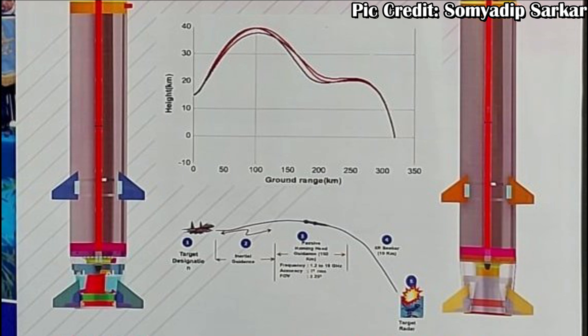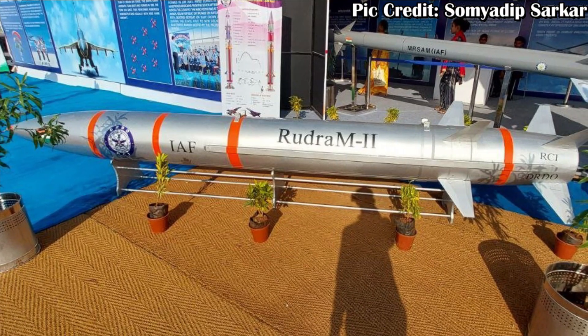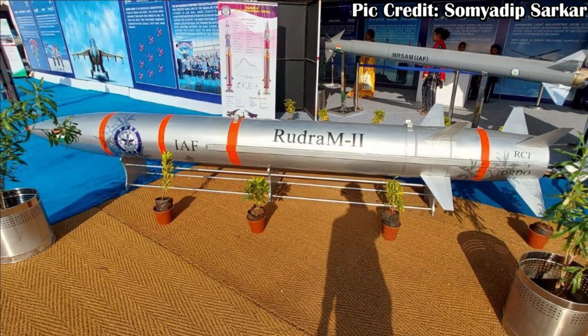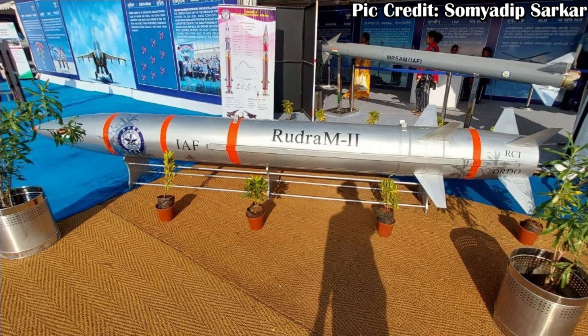The missile continues to descend until it achieves an altitude of 20 kilometers, by which time it would have also covered a horizontal distance of 200 kilometers. The missile then changes its trajectory, moves slightly upward, and then descends again. This is done to give the missile the capability to attack at an angle of 80 degrees, which is almost vertical — a top attack. The overall flight duration of the missile is 400 seconds and the range is 300 kilometers.